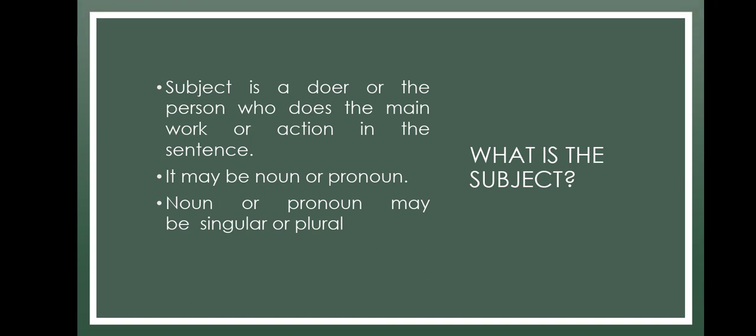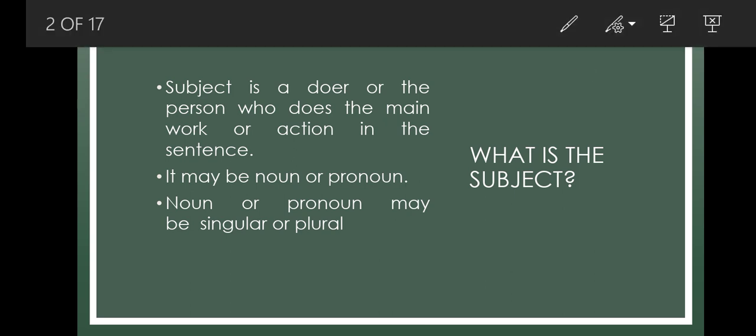First of all, we should know what a subject is. A subject is a doer — the person who does the main work or action in the sentence. The doer is the one who performs the main action in the sentence, and that is the subject. It may be a noun or a pronoun.